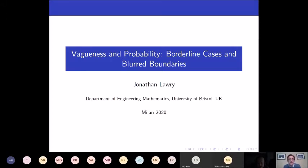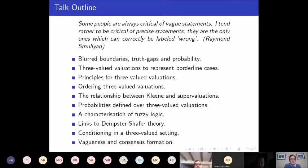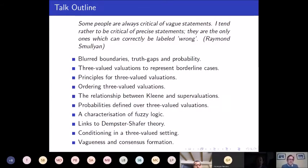Here's a brief outline of the talk. It looks quite long, but hopefully it won't be too bad. I just want to give a brief introduction about these ideas about blurred boundaries and truth gaps and probabilities.